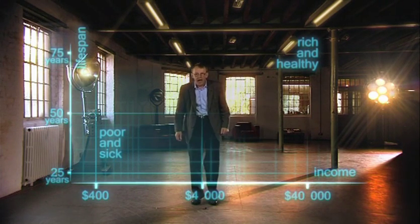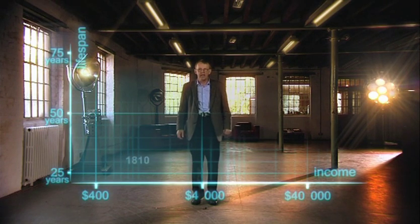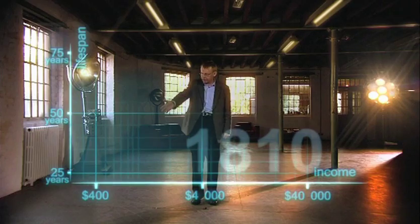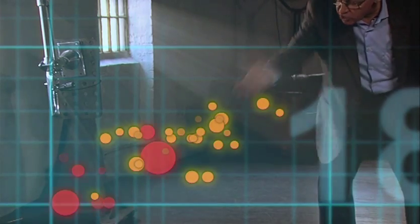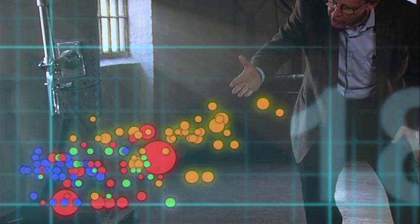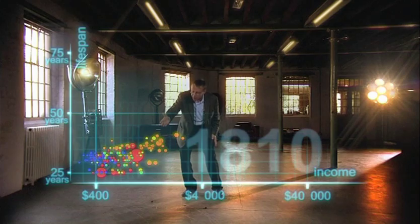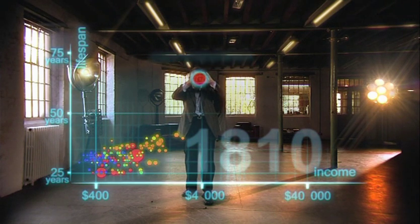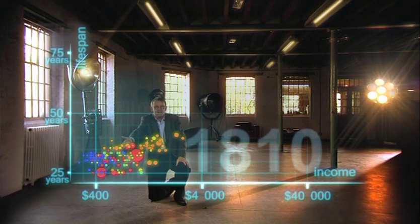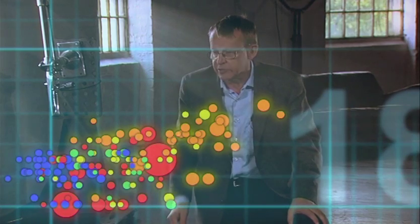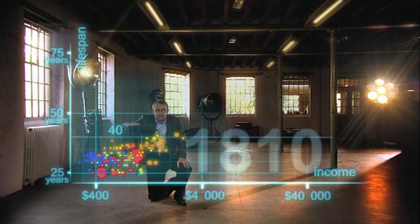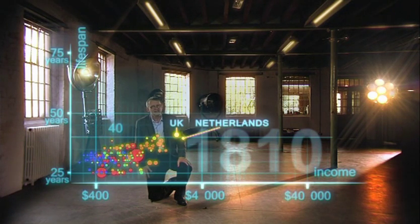Now I'm going to show you the world 200 years ago in 1810. Here come all the countries — Europe brown, Asia red, Middle East green, Africa south of Sahara blue, and the Americas yellow. The size of the country bubble shows the size of the population. And in 1810, it was pretty crowded down there — all countries were sick and poor. Life expectancy was below 40 in all countries, and only the UK and the Netherlands were slightly better off, but not much.